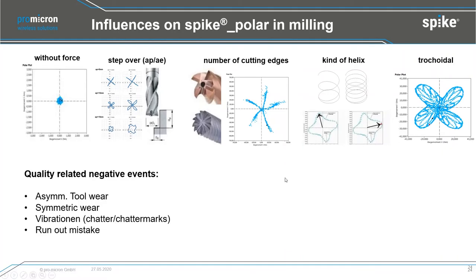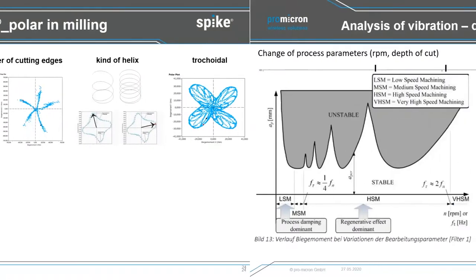The shape of Spike Polar varies depending on AP and AE: you can get a cross, a flower, or nearly a circle depending on how many cutting edges are active simultaneously, the number of inserts, and the helix angle. Besides normal influences, several quality-related negative events in milling can be detected with Spike Polar: asymmetric tool wear, vibrations, and even runout mistakes.